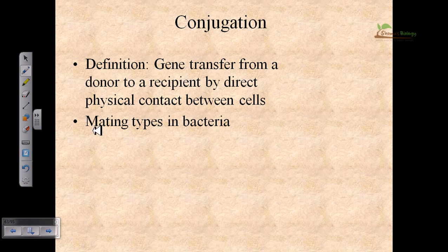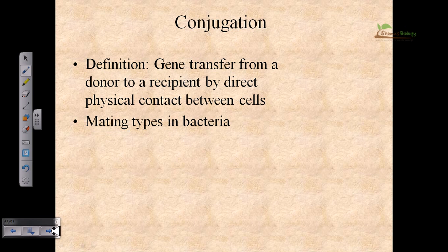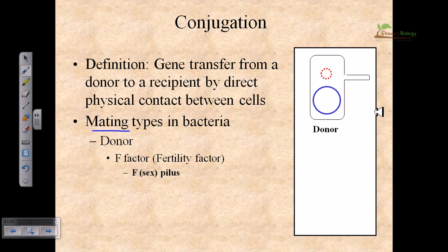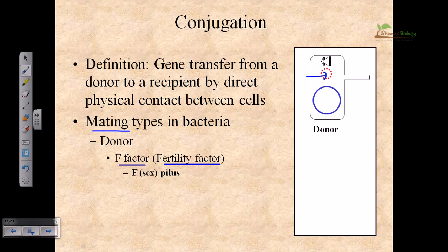There are different mating types of bacteria — different things called mating types — such as F type or HFR strains. Students often create confusion about these terms. Now, a donor cell must have something before conjugation called the F factor or fertility factor. This fertility factor means the cell must have an extra-chromosomal part — not part of the chromosome — and this extra-chromosomal part is often called a plasmid.